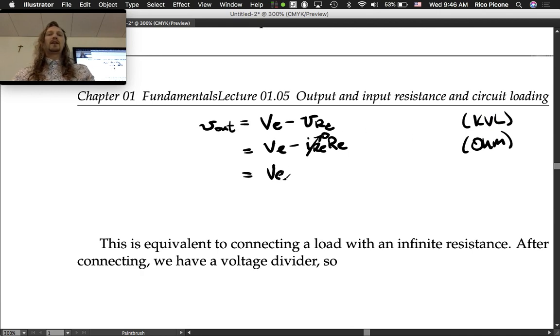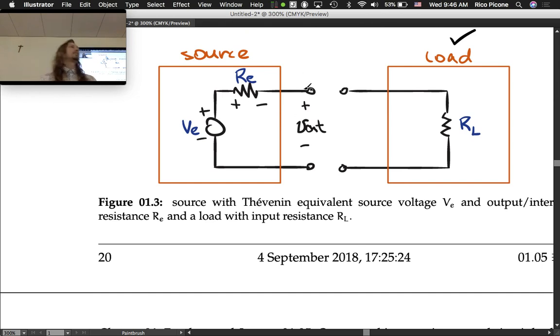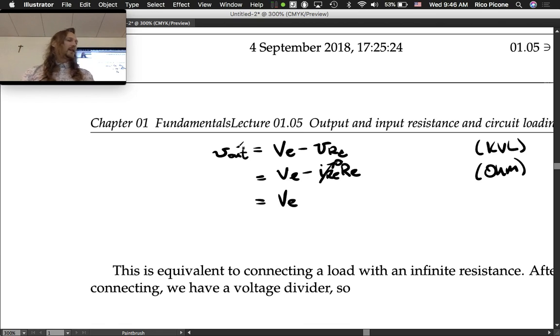This is another thing that we'll often later just look at and reason our way through without writing equations. If you have a source that doesn't have a connection, it's just disconnected, we don't flow any current from it and the output voltage is just the source voltage. It doesn't get loaded by its internal or output resistance because there's no current flowing through it. This is equivalent to connecting a load with an infinite resistance.